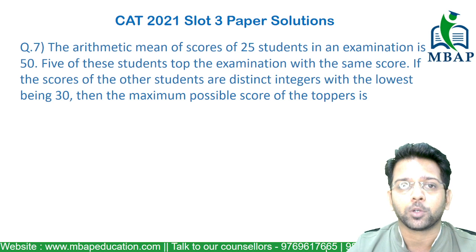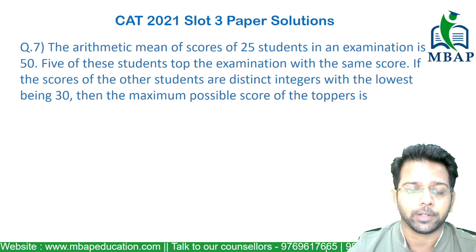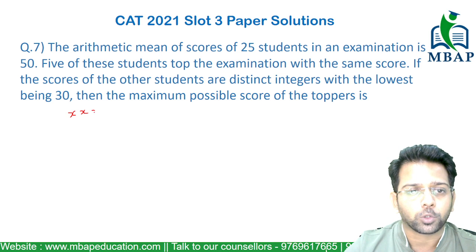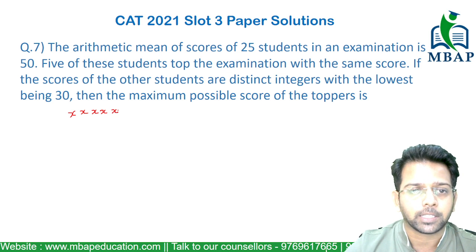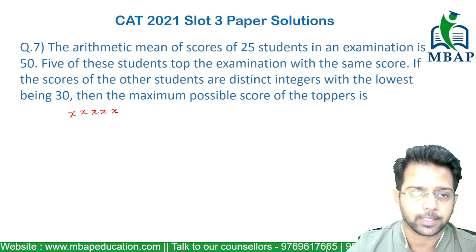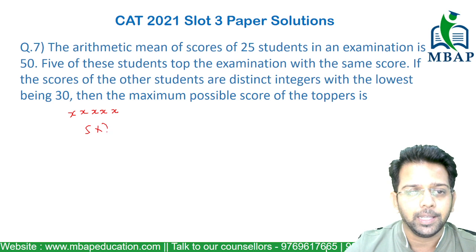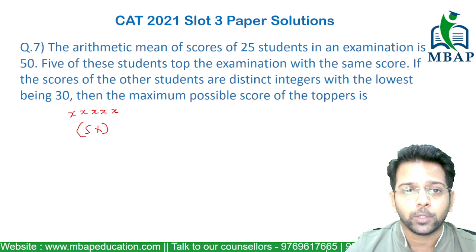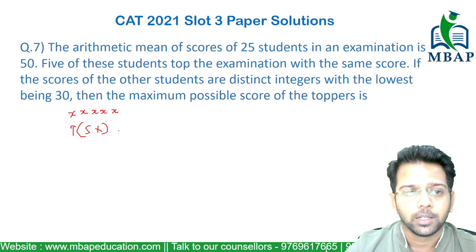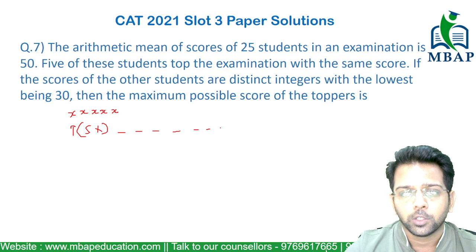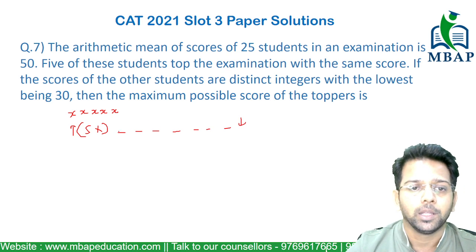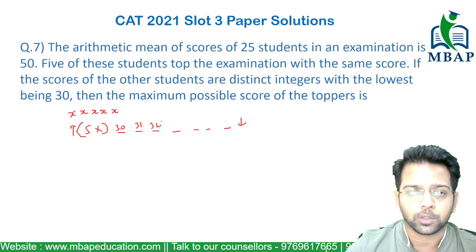The question is: what is the maximum possible score of these 25 students? Five of them who top the examination have the same score, which is x, giving 5x total. To maximize this, the other 20 numbers should be as minimum as possible, with the lowest being 30 and all of them distinct.